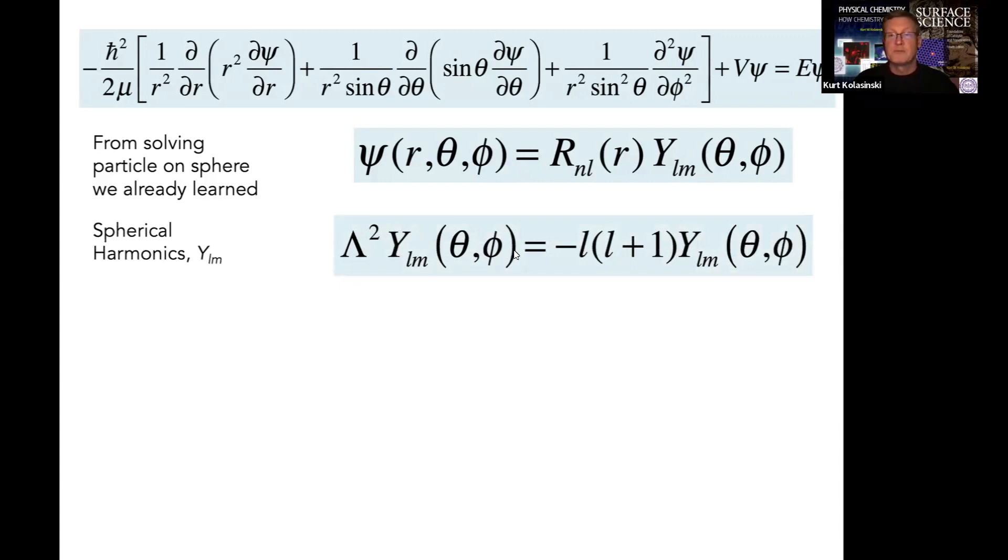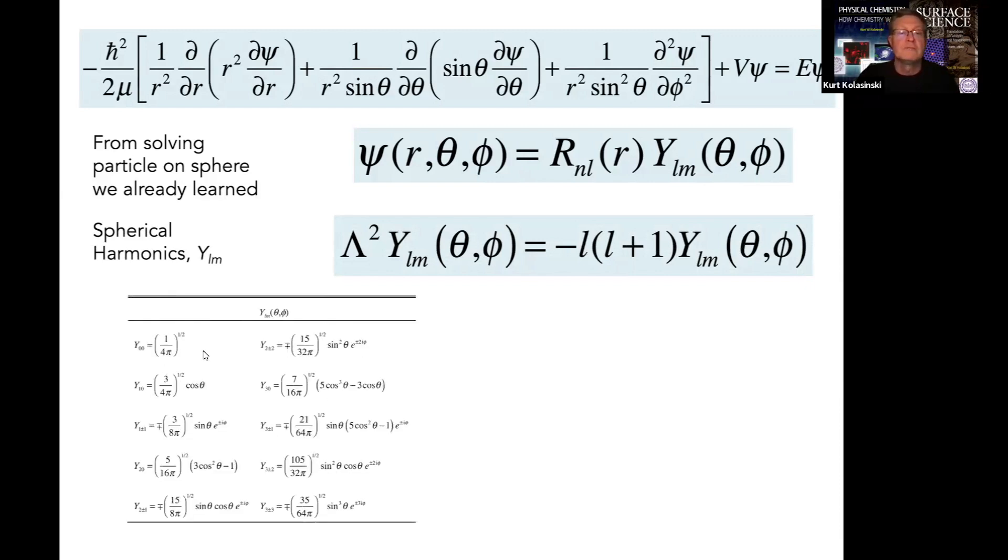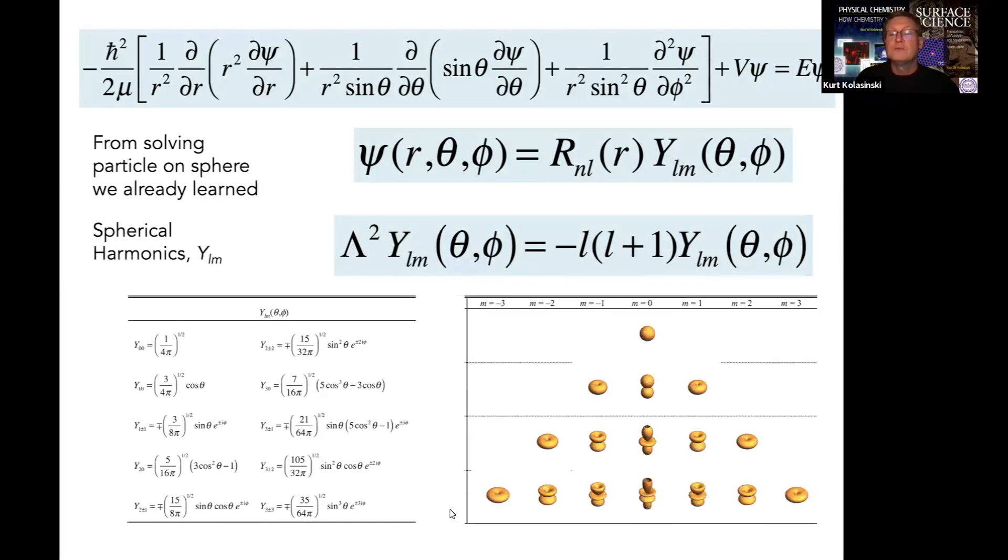Those ylms, the spherical harmonics, we already found the solution from the particle on a sphere problem. Those functions are well known to us now. They involve sines and cosines of thetas, these exponentials in i-phi, and normalization constants. They lead to these different shapes, characteristic shapes which look very much like the shapes of orbitals we may have encountered in earlier descriptions of chemistry.